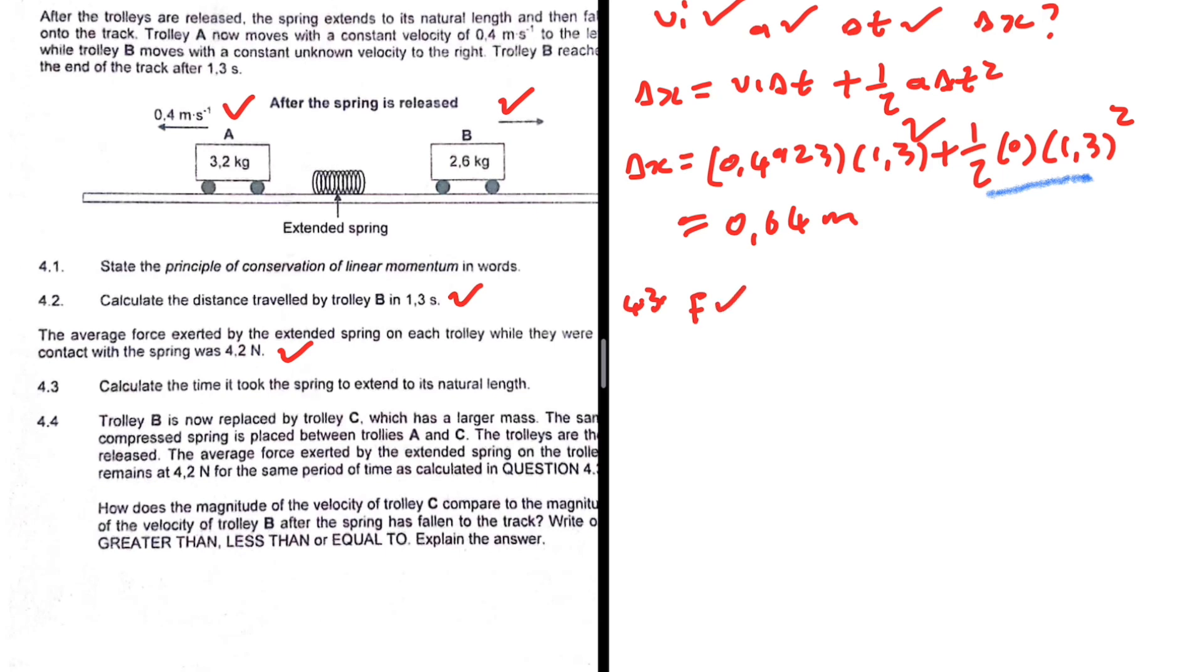And then we're interested in the time. Which other variable do we have? We have the change—well, the impulse—the changing momentum of A and B. We have the changing momentum of those objects, so we have delta p. Then how can we find delta t? If we have the force and delta p, we can say that F is equals to the rate of change in momentum, right? This is Newton's second law in terms of momentum.